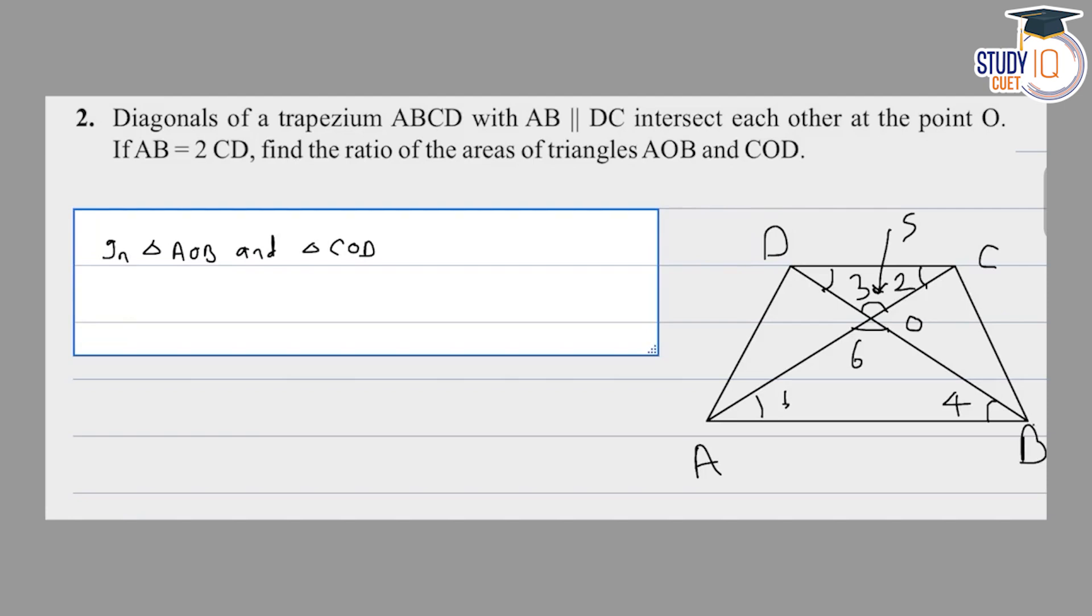Triangle AOB and triangle COD. This is point O. Here angle 1 and angle 2 are equal. These are alternate angles.